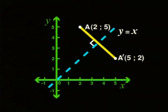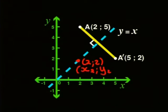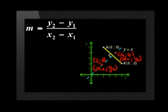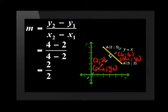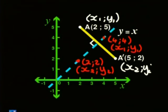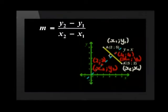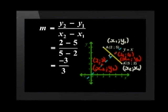Now let's move on and have a look at the gradients of perpendicular lines. To find the gradient of the line y equals x, we need to choose any two points on the line — let's choose (2, 2) and (4, 4). To find the gradient of the line AA', we use the coordinates of A and A', that is (2, 5) and (5, 2). So that's 2 minus 5 over 5 minus 2, which is negative 3 over 3, and the gradient comes to negative 1.